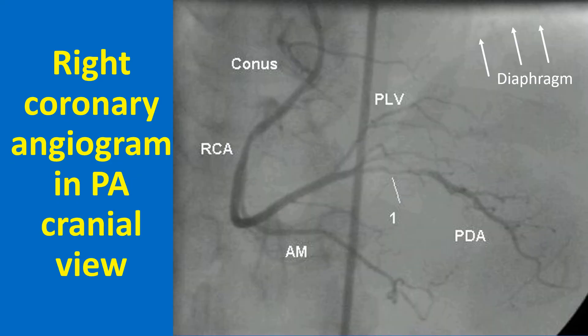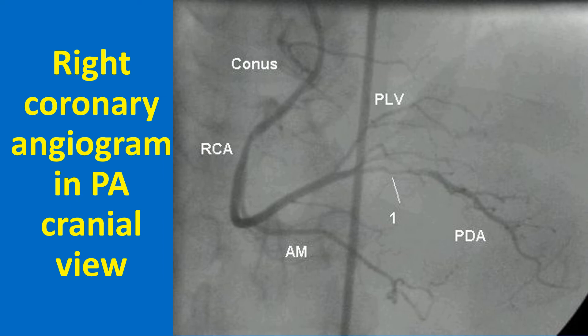A PA cranial view of right coronary angiogram is shown; as in other cranial views, the diaphragmatic shadow is seen high up in the field. A tight lesion is seen in the proximal portion of the PDA marked as 1. PLV is the posterior left ventricular branch, AM is the acute marginal branch, RCA is the right coronary artery, and conus is the conus branch of the right coronary artery. Sometimes while cannulating the right coronary artery, the catheter slips into the conus artery, causing wedging and damping of catheter tip pressure. Prolonged inadvertent injection of contrast into the conus branch can cause ventricular tachycardia or ventricular fibrillation. A large conus branch crossing the right ventricular outflow tract can cause problems during intracardiac repair of tetralogy of Fallot.